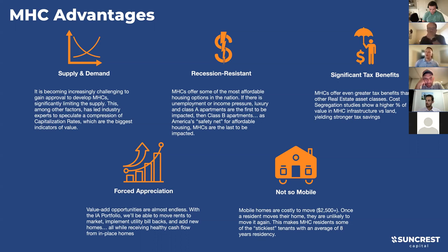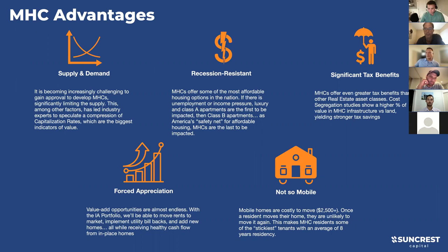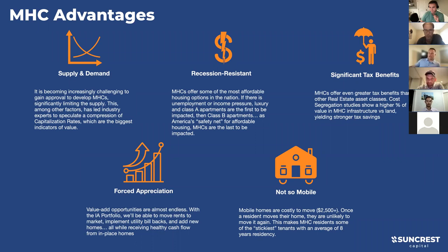Supply and demand is a big reason to invest. There are roughly 65 million Americans living in poverty and demand for safe affordable housing has never been higher. There are roughly 40,000 to 45,000 total mobile home communities in the entire country, with about 100 a year being shut down, closed, or redeveloped into commercial, apartments, or retail - and just about 10 new ones being built or significantly added on to. So supply is going down and demand keeps going up.